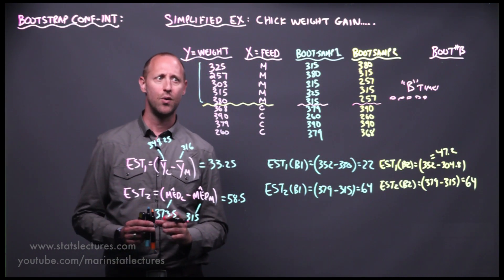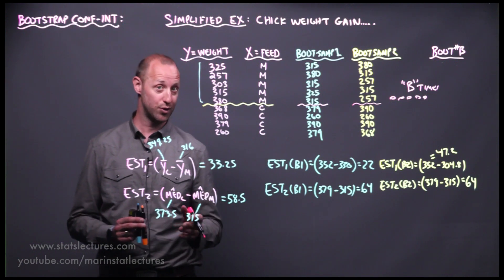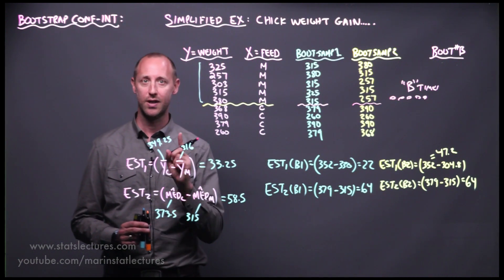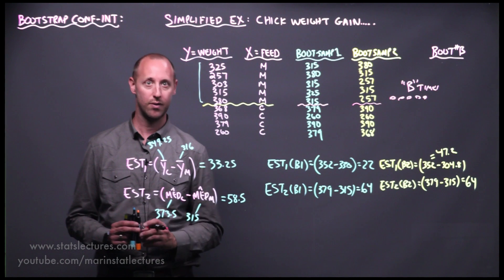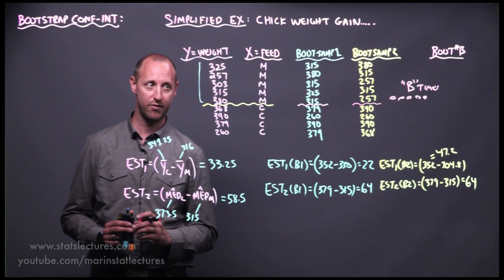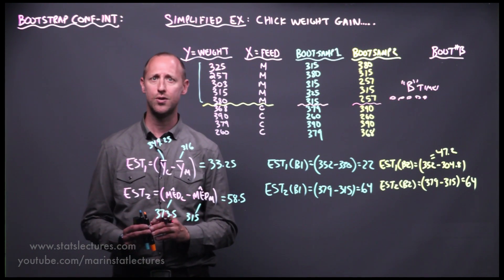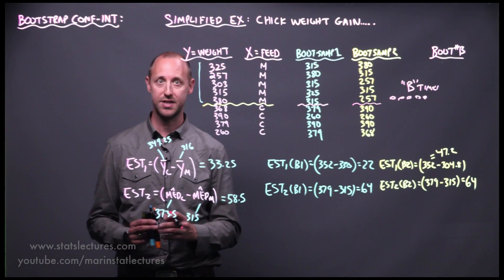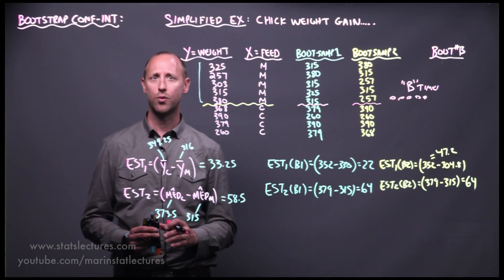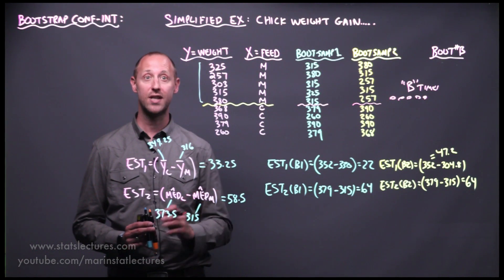We can now use all the different bootstrap estimates to build our confidence interval. In a previous video we discussed bootstrap confidence intervals for a single estimate, covering the percentile approach, basic approach, and normal approach. Here we'll start to look at implementing this on the full data set using R.